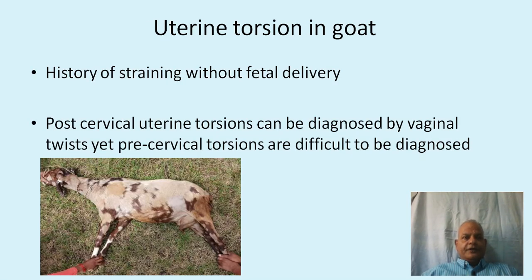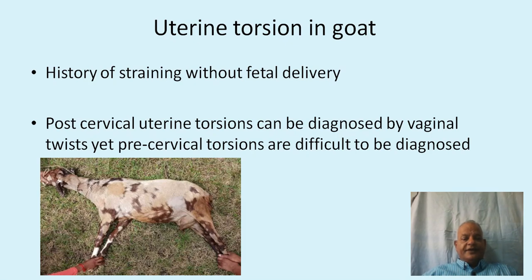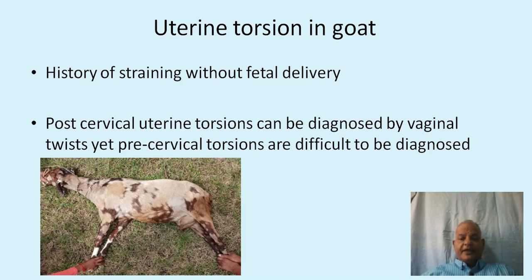Uterine torsion in goats presents with a history of straining without fetal delivery. Post-cervical uterine torsion can be diagnosed by a vaginal twist, yet pre-cervical torsions are difficult to diagnose in the goat. Torsion correction is easier due to the smaller size of the animal, but exact diagnosis continues to be difficult in goats.